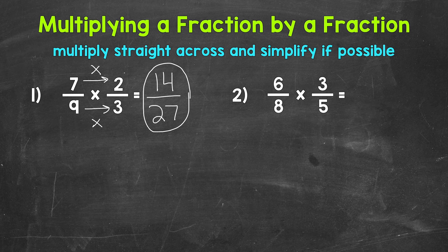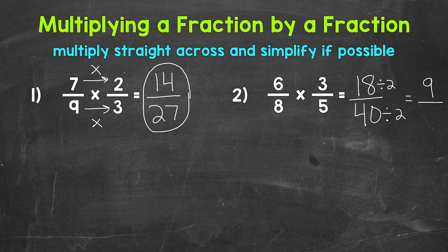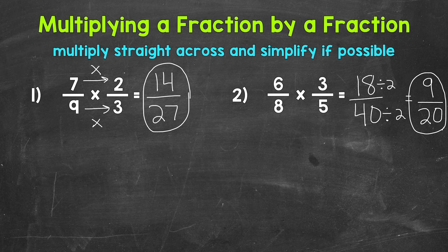Let's move on to number 2, where we have 6 eighths times 3 fifths. Let's multiply straight across, starting with the numerators. 6 times 3 gives us 18. Now for the denominators: 8 times 5 gives us 40. So we end up with 18 fortieths. Now 18 fortieths can be simplified — the greatest common factor between 18 and 40 is 2. So let's divide both by 2: 18 divided by 2 is 9, and 40 divided by 2 is 20. Final simplified answer: 9 twentieths.